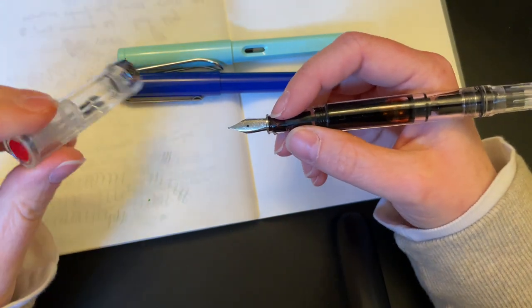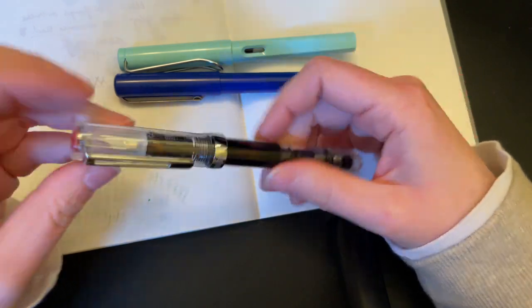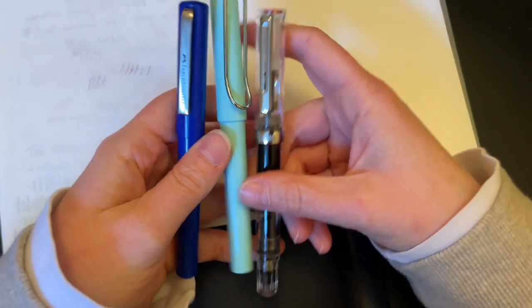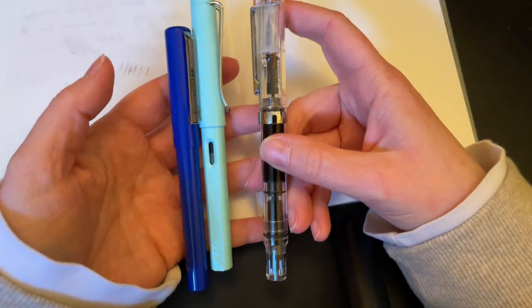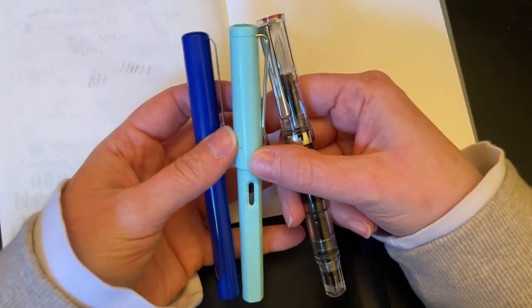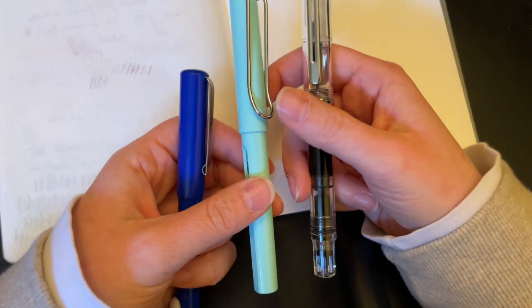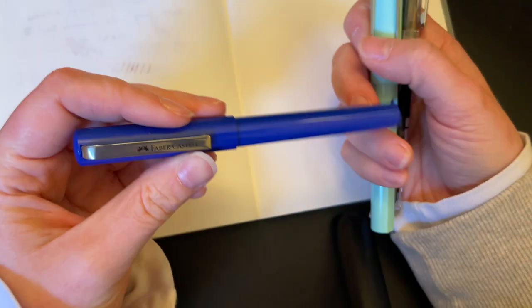Both of these are cartridge converters, so this will also hold more as far as bang for your buck. Definitely the least offensive. To me, as far as the build quality goes for the three triangle grip pens, I would say the Eco probably has it in that category, followed by the Lamy Safari, then the Faber-Castell.